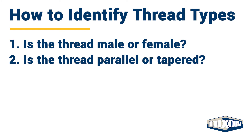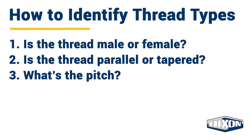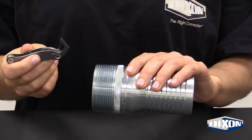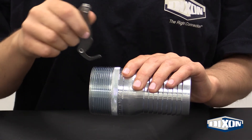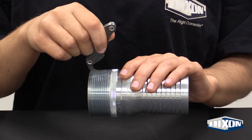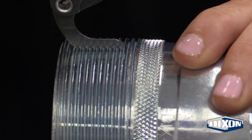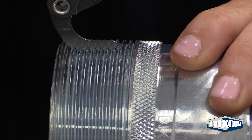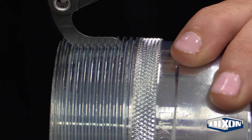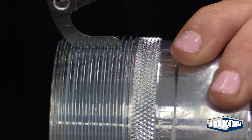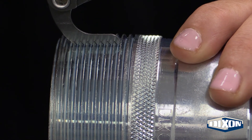Step 3: What's the pitch? Thread pitch refers to the space between threads. Use a thread gauge pitch tool, caliper, or steel rule to measure the distance between threads on the length of the fitting.